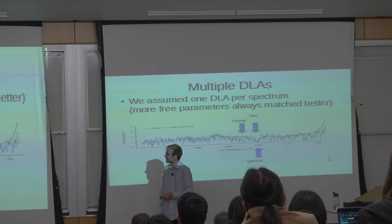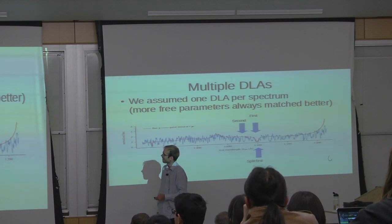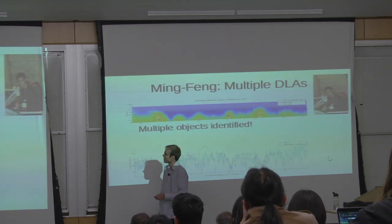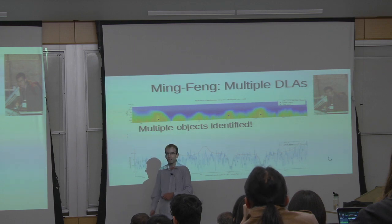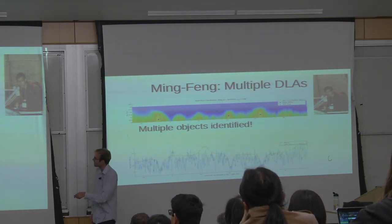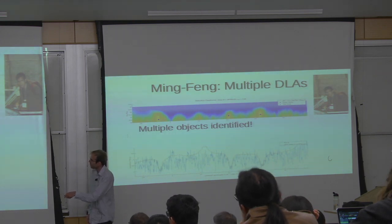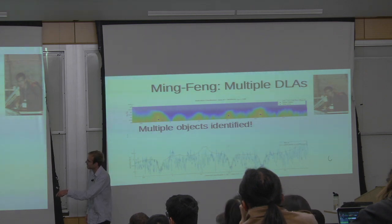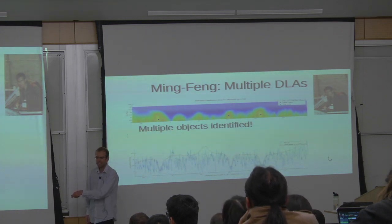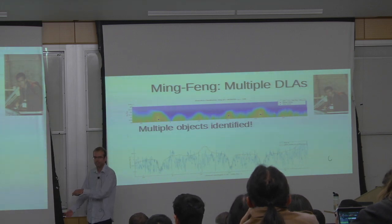Like any good faculty member, I said: I have this problem I cannot solve, I'm going to find a graduate student and make them solve it for me. Ming Feng solved the problem by looking at a lot of spectra. This spectrum shows dips here, here, and here — three DLAs in the same spectrum. This happens maybe 10 times in 100,000 spectra, so it's not a very common thing.